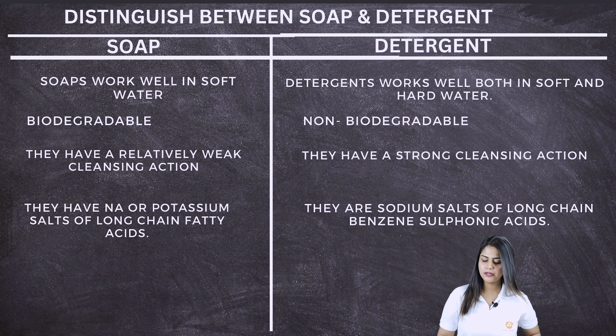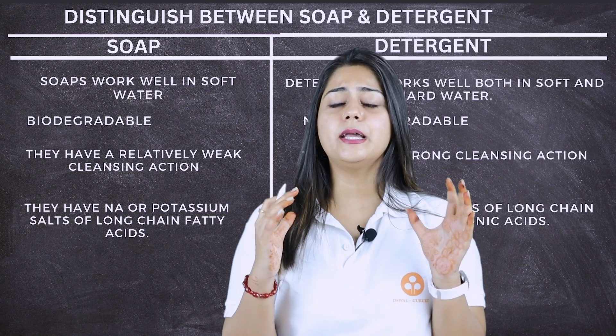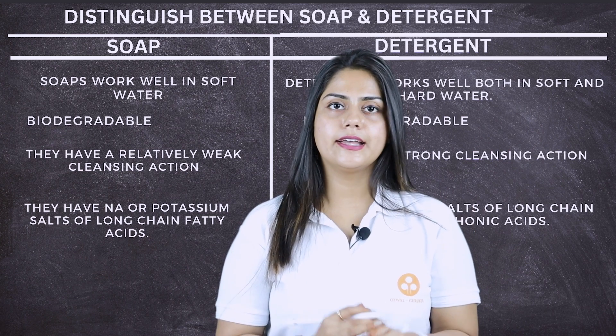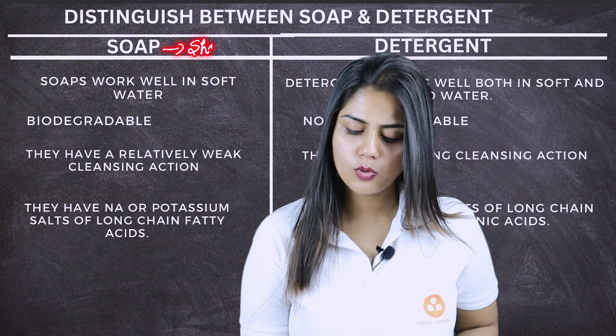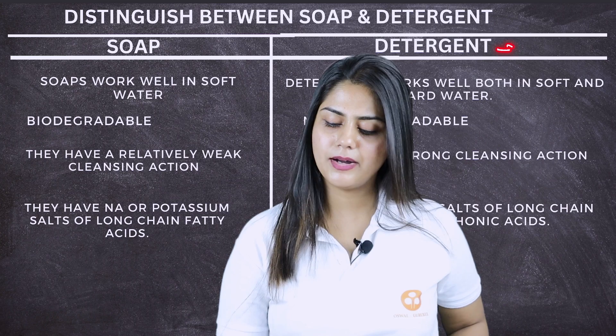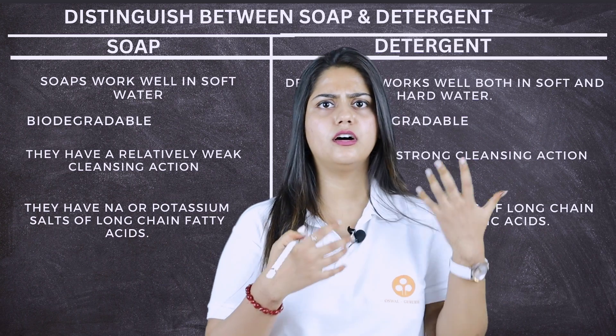Detergent is sodium salts of long chain benzene sulfonic acid. If this seems tough, you can note this point. For examples: soap includes shampoo and face wash, which produce foam. Detergents include washing powder and toilet cleaners because they have a stronger cleansing action.